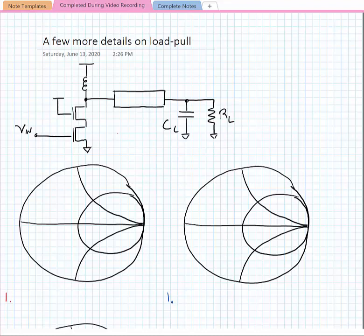Okay, so here I wanted to talk a little bit more about the details on the load-pull method. When we do a load-pull, what we're really trying to do is present different impedances to the drain of the transistor.